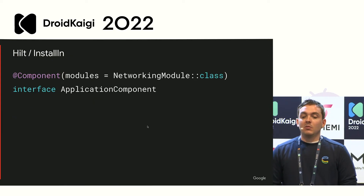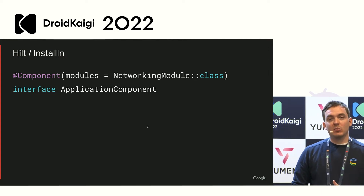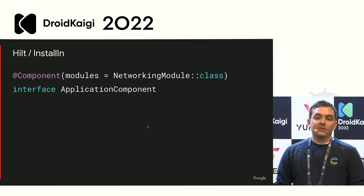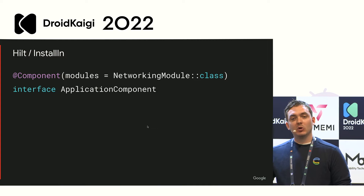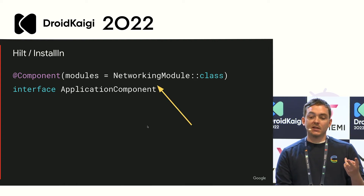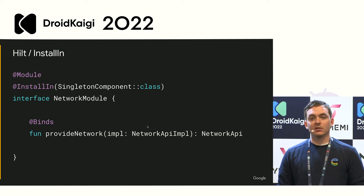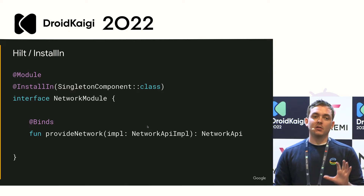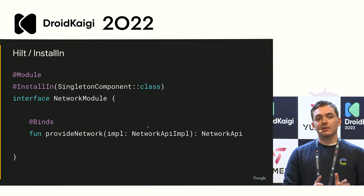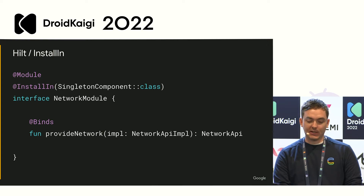The next big thing is @InstallIn. Remember before where we had our component and had to give it a list of modules we wanted to install? That ends up being cumbersome in a big application — if you want to swap modules, like using a test networking module in tests, you'd have to write a separate application component with a separate list of modules just for tests. Hilt flips things around: instead of listing the module on the component, you tell the module where it should be installed. As long as the module is included in your build target at compile time, the component will grab everything trying to be installed. This makes it much easier to set up test environments without rewriting components.